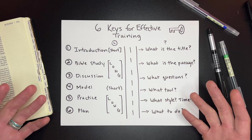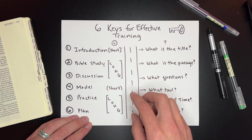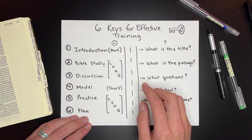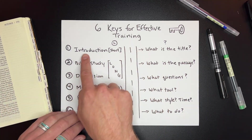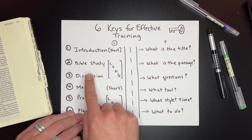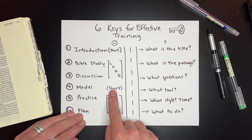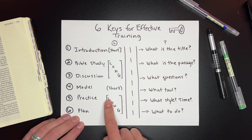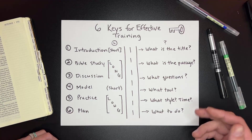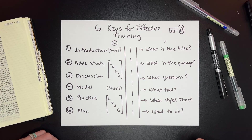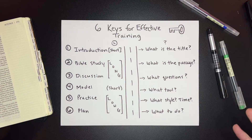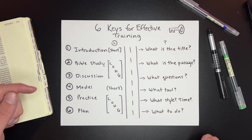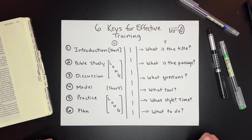So ask yourself: with all your modules that you train in your discipleship process — in field one, field two, field three, field four, field five — is there a simple format? A simple introduction? Is there a Bible study that goes with it? Discussion questions? Do you have something you'll model for them briefly that they can reproduce? How long do they need to practice? And what's the ultimate goal — what are you wanting them to do with it? This is the six keys for effective training. Take your training toolbox, push it through this filter, and ask: have you narrowed down all the tools into these six effective keys so it can be reproduced until there's no place left?